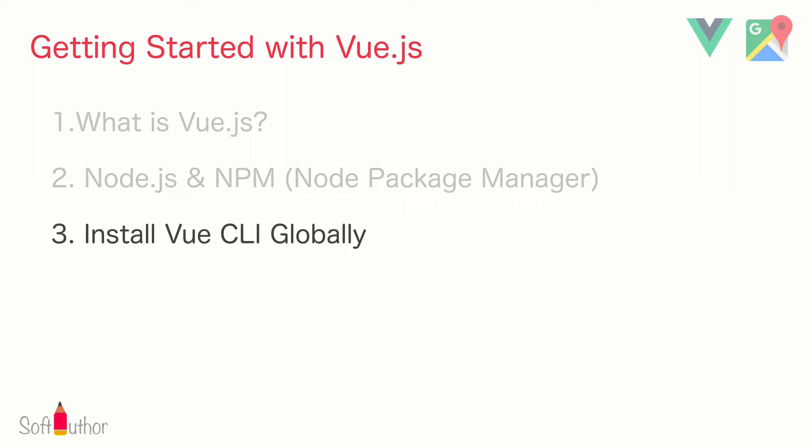Vue CLI is an npm package that allows us to create a Vue project quickly by asking a series of questions to configure our project the way we want it, such as do I need a router included, how I want to build the Vue app, and so on. Let's install it globally so that I can create a Vue project anywhere in my computer.